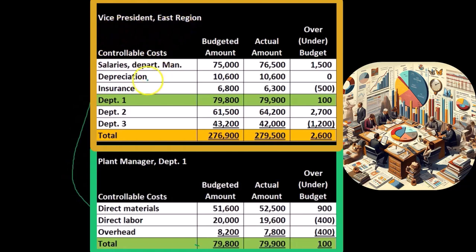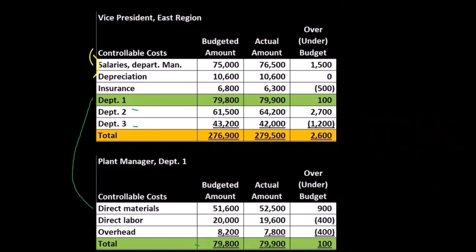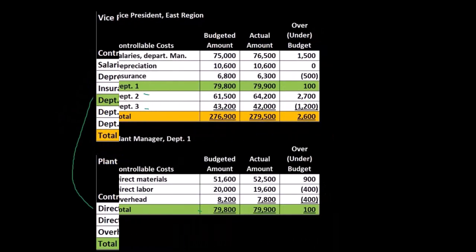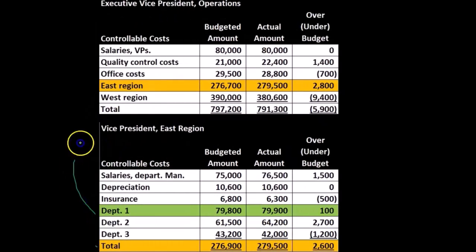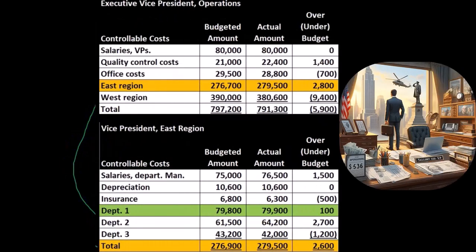The vice president for the East region has a report that shows that in summary, as well as the other departments that they're in charge of, and then the other costs that they have control over — the salaries for the department management, depreciation, and insurance. And then if we go one level up, here's our totals. We've got the vice president for the East region, and that's going to total up as we go up to the executive vice president of operations. So now we've got the East and the West.